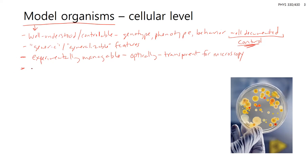A major reason for using model organisms is to compare your results to the literature and other labs. There are so many different cell types and organisms — if everyone used their own unique strain, it would be very hard to compare results or review the literature. Scientific literature is supposed to be reproducible, so if you're using a specialized cell line no one else can access, it's very hard to repeat that work.